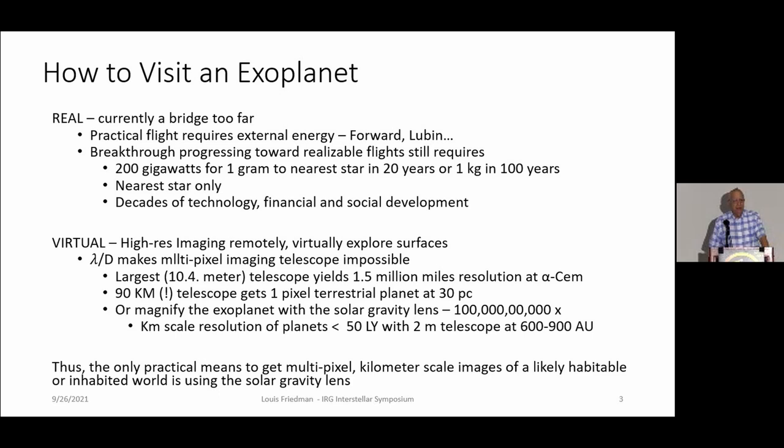But even in that idea, it's very technology limited. The most practical thing they're hoping to get to is the nearest star with one gram in 20 years. And that's only the nearest star, which means only one exoplanet, or maybe a couple at that star. And they're not necessarily the most interesting ones.